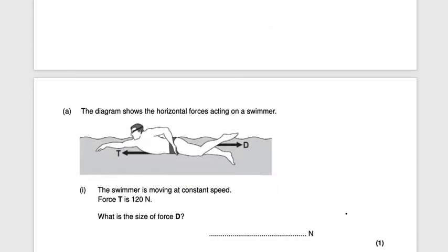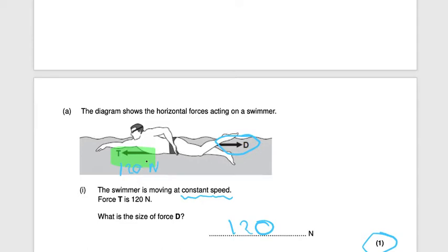Next question: the diagram shows the horizontal forces acting on a swimmer moving at constant speed. Force T is 120 newtons. What is the size of force D? Since the swimmer is moving at constant speed, the opposing forces must be equal and the resultant force is zero. Therefore, force D is 120 newtons — one mark.